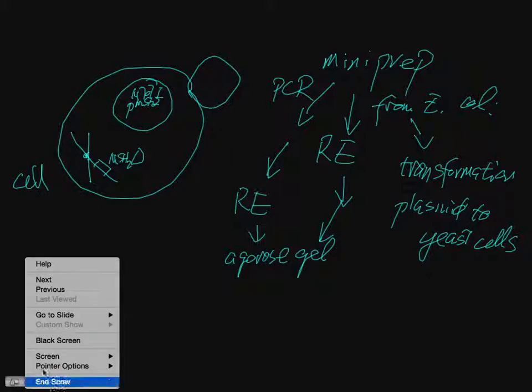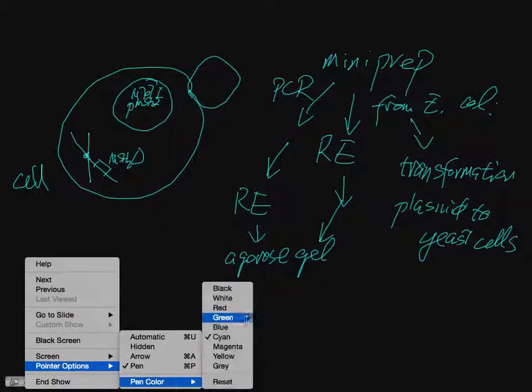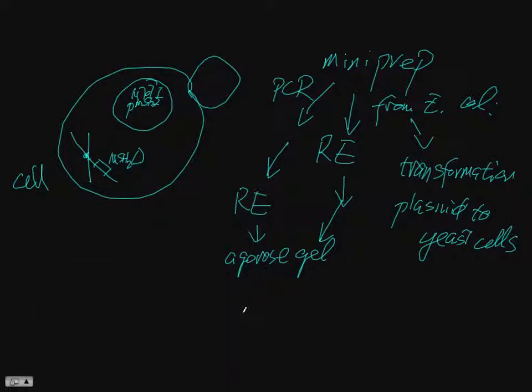We have to have a selection marker on the plasmid. There's also a reporter plasmid.